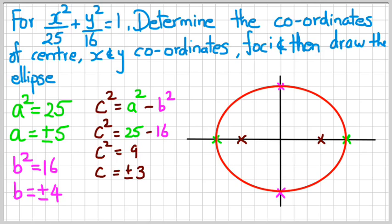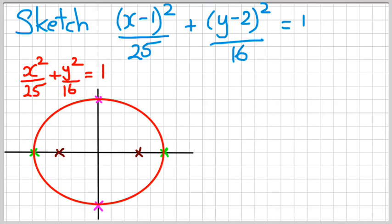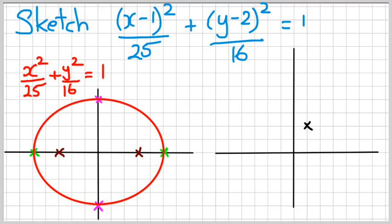Now what happens if the center is not at the origin at (0, 0)? I've got the same a and b values as the previous question. I want to look at what happens when the center is actually moved. Here's the diagram from the previous question — x²/25 + y²/16 = 1. The center is going to move one unit on the x-axis and two units on the y-axis in the positive directions, so that's where the new center is going to be.